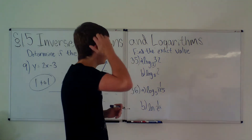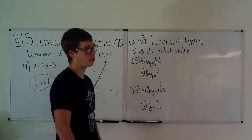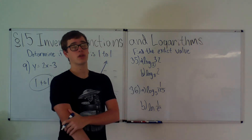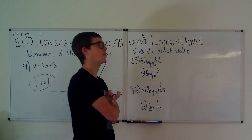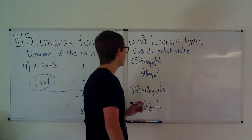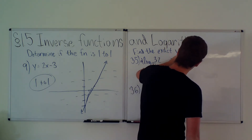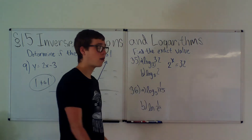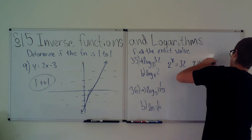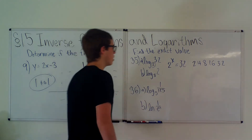Running a few horizontal line tests, no value is taken twice, so the function is one-to-one. Now onto problems 35 and 36: find the exact value. For log_2(32), we can use the change of base formula, but the easier way is to note this equals 2^x = 32. Knowing powers of 2: 2, 4, 8, 16, 32 — that's 5 steps, so x = 5.